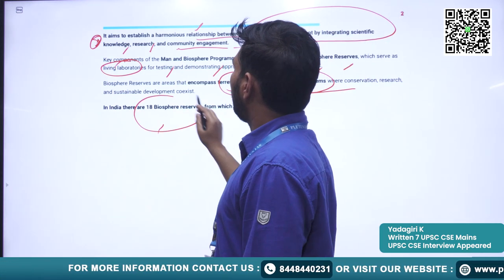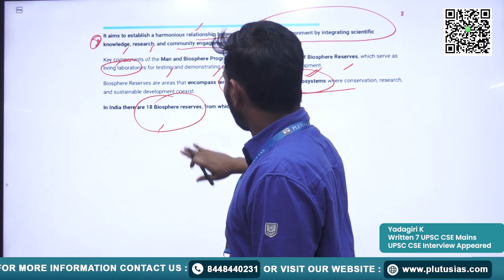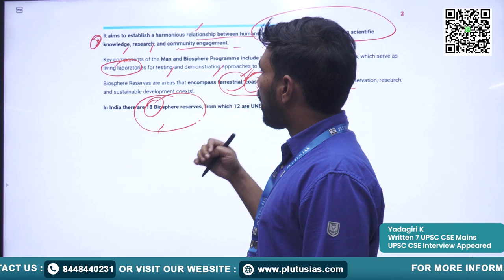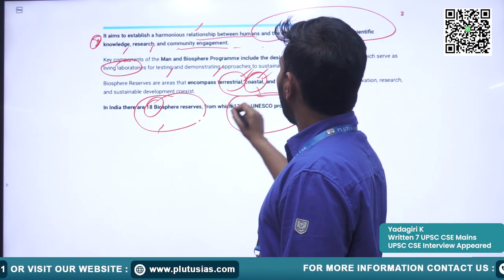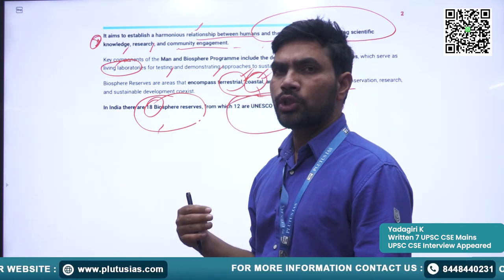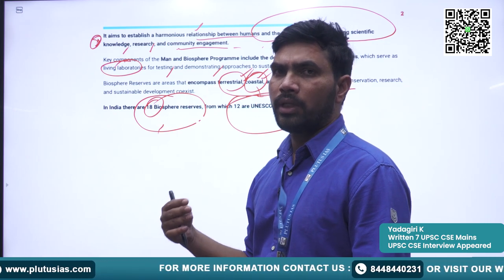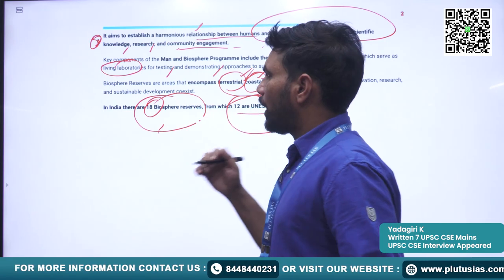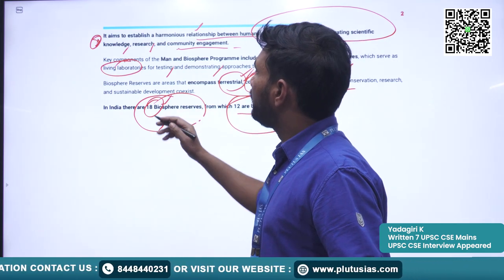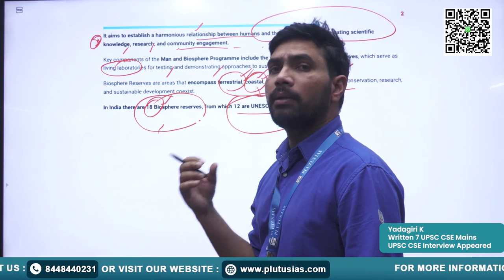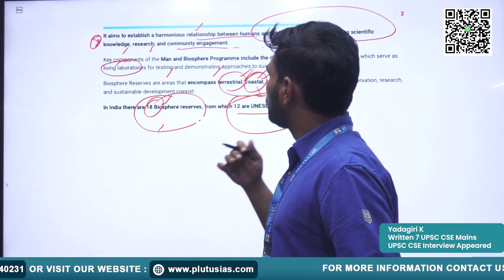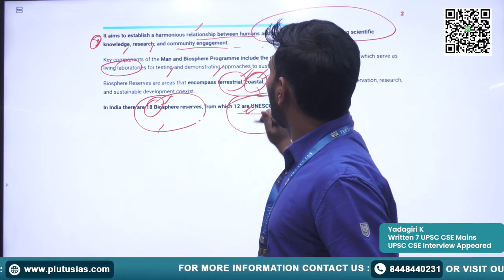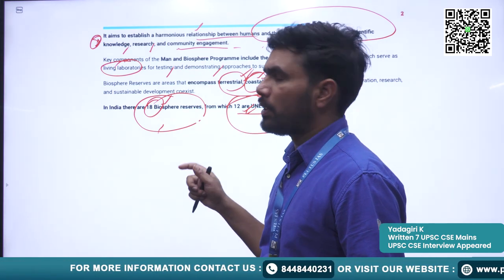At present, there are 18 Biosphere Reserves in India. The Indian government has designated 18 Biospheres, from which 12 are under the protection of UNESCO's Man and Biosphere Program. The government of India recognized all 18 Biosphere Reserves; among those 18, 12 are under the protection of UNESCO.